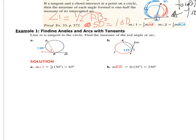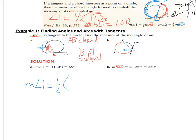In example A, line M is the tangent line, AB is the chord, and B is the point of tangency. We want to find angle one. The intercepted arc is arc AB which equals 130 degrees. So the measure of angle one equals one half of 130, which is 65 degrees.